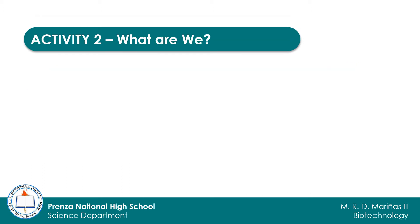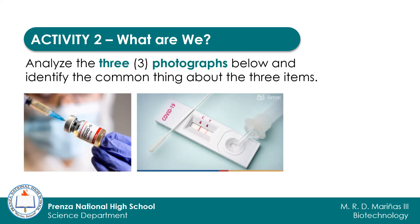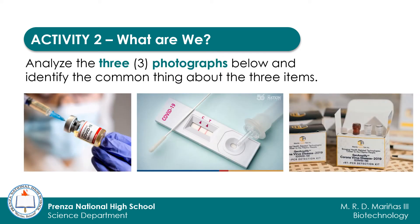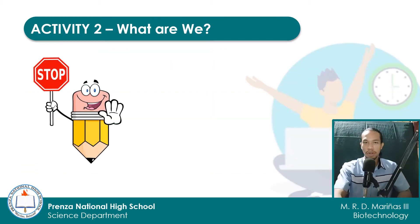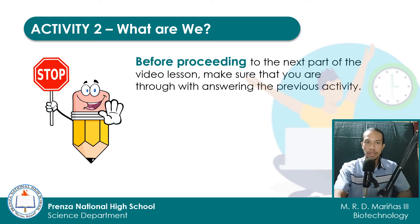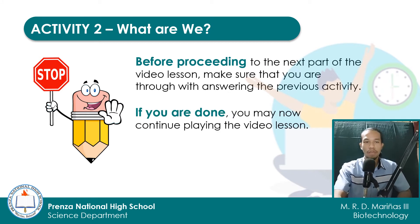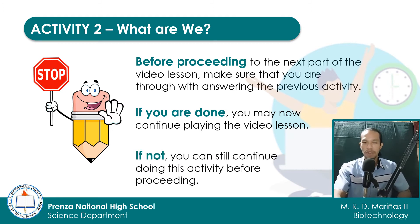For activity number 2 entitled What Are We?, you are asked to analyze photographs and identify the common thing about the 3 items. You are given until the next day to write down your answer on the activity sheet provided to you. Before proceeding to the next part of our video lesson, make sure that you are through with answering the first part of this activity sheet. If yes, you may now continue playing the video lesson. But if not, you can still have your time to finish it.